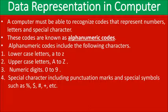These codes are known as alpha-numeric codes. Alpha-numeric codes include four types of characters: small letters (lowercase), capital letters (uppercase), numbers from 0 to 9, and special characters such as percent (%), dollar ($), hash (#), and plus (+) symbols.